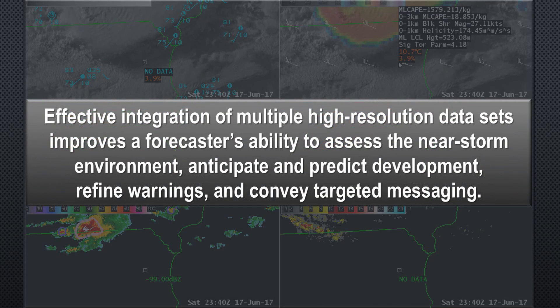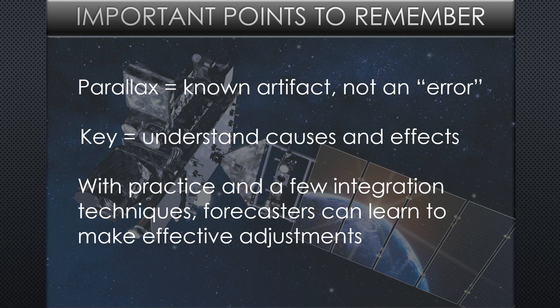With practice, effective integration of high-resolution datasets can enhance a forecaster's abilities in many ways: assessing the near-storm environment, anticipating rather than reacting to development, and in some cases drawing or refining warning polygons while waiting for the next radar volume scan. In radar-sparse regions, forecasters are increasingly employing GOES-16 imagery as a crucial component to their convective warning decisions. This will likely become even more prevalent once the GOES-16 GLM data are operational. The key is to understand and account for the effects of parallax when using satellite imagery to determine and communicate specific threats. By learning and practicing a few simple techniques, forecasters can learn to make effective adjustments to the slight geolocation displacements produced by parallax.